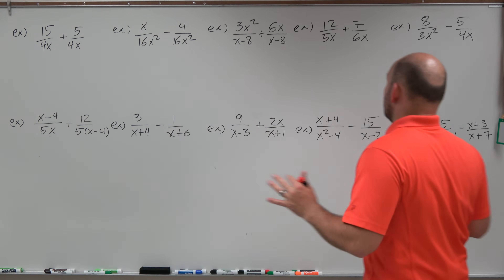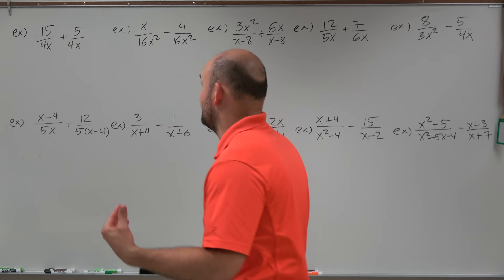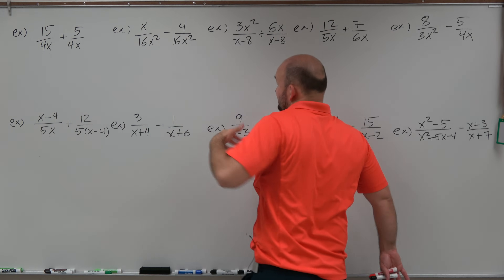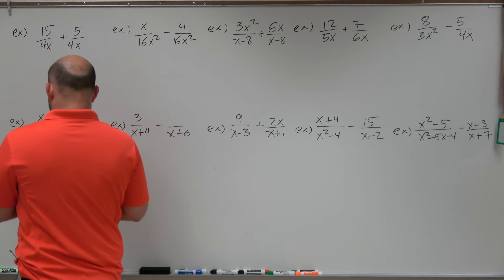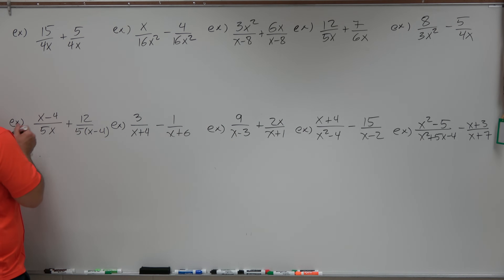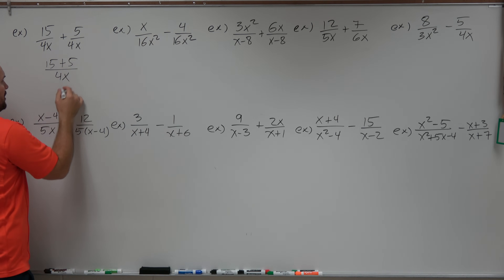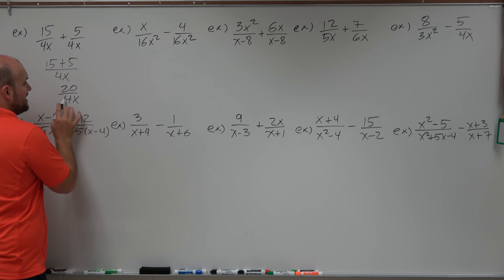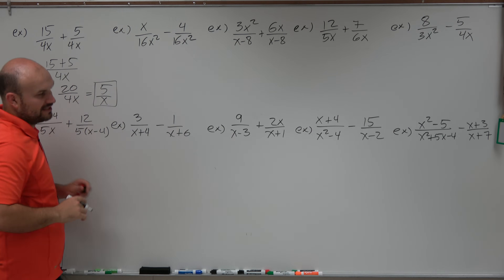The first three examples are pretty basic because the denominators are the same. It doesn't matter what the denominators are — terms or expressions — as long as they are exactly the same, we just combine the numerators and leave the denominator the same. So in this case, it's 15 plus 5 over 4x. Well, 15 plus 5 is 20 over 4x. We can simplify that — 4 goes into 20 five times — so that's 5 over x as my final answer.